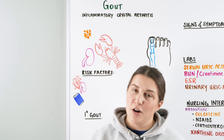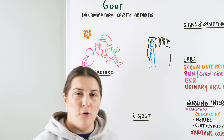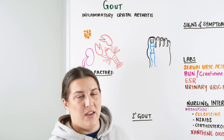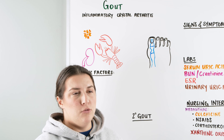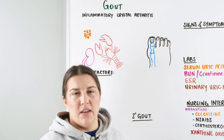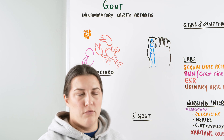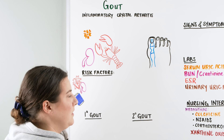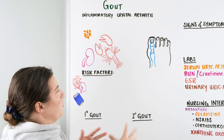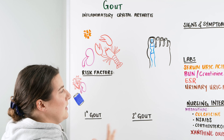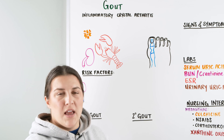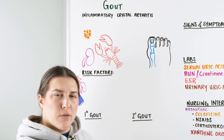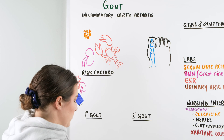When we're talking about gout, we're going to be focusing mainly on the fact that it's an inflammatory type of arthritis. And it's unique in that it's a crystal arthritis, meaning that we get a buildup of crystals that get deposited into our joints. And we're going to talk about how that occurs.